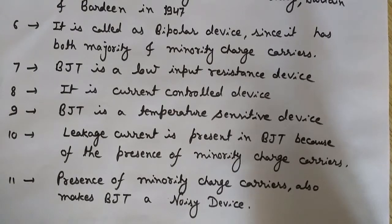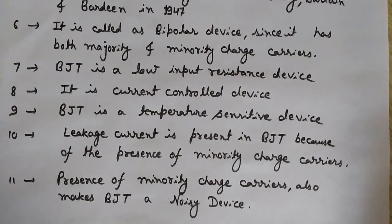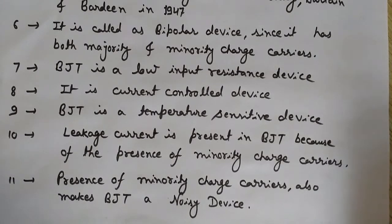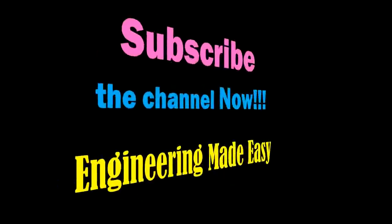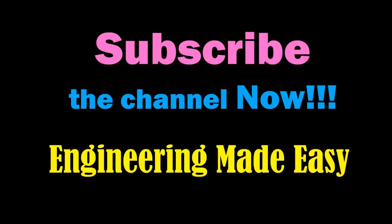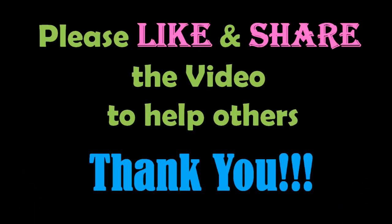These are some basic properties and the basic structure of BJT. In coming lectures we will deal with each of these properties, the structure, the working, various parameters, their dependencies, and much more. Keep watching Engineering Made Easy — please like, share, and subscribe to the channel so you get notifications as soon as new videos are published. Thanks for watching, have a nice day!